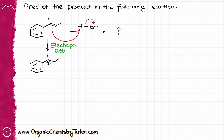This first step can potentially give me two different carbocations: one at carbon number one and another one at carbon number two. However, carbon number one is tertiary, so that is going to give a tertiary carbocation. We ended up with a tertiary carbocation which is not only tertiary, but also benzylic, meaning this carbocation is incredibly stable — more stable than anything else we can form in this step. That is the carbocation I'm going to go with.